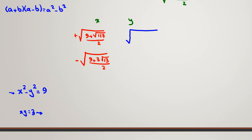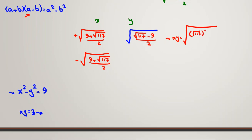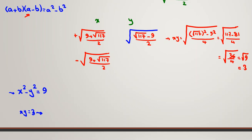Writing y = √(117 − 9) / 2 for easier calculation, we compute xy using the identity: the product becomes the square root of (117² − 9²) / 4, which is the square root of (117 − 81) / 4 = √(36/4) = √9 = 3. So xy = 3 is verified.